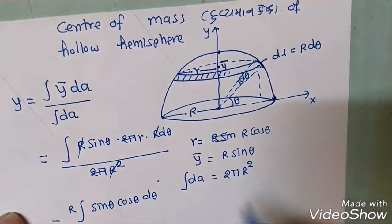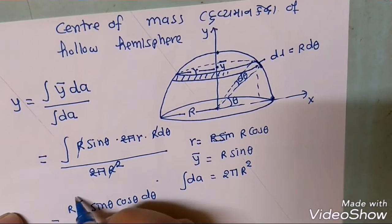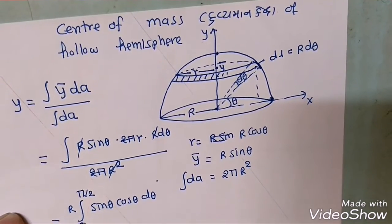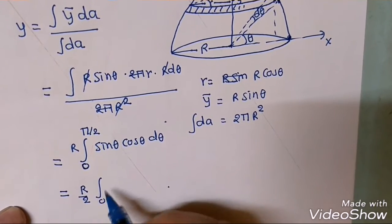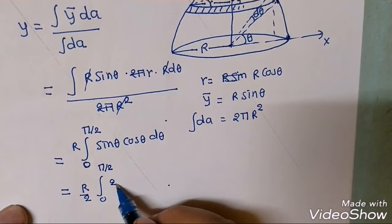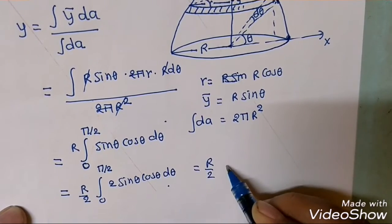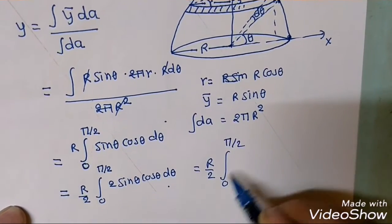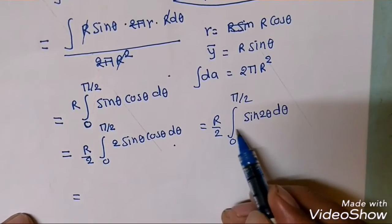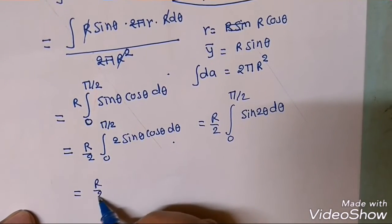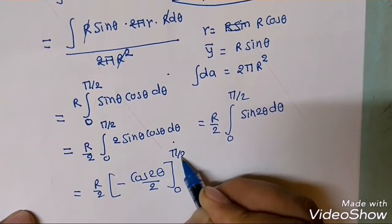The limit is 0 to pi by 2. So 0 to pi by 2 is equal to R divided by 2. We have 2 sin theta cos theta equal to R divided by 2, and 2 sin theta minus cos theta divided by 2, lower limit 0, upper limit pi by 2.